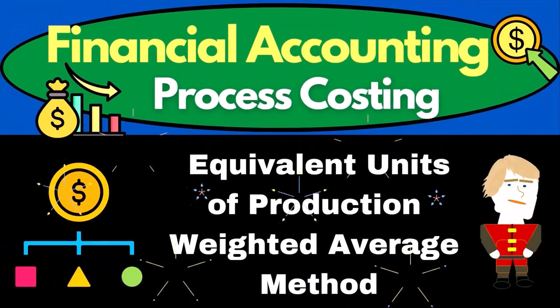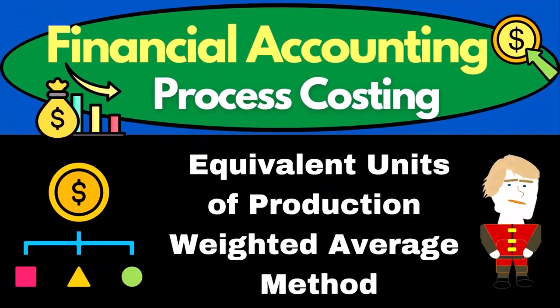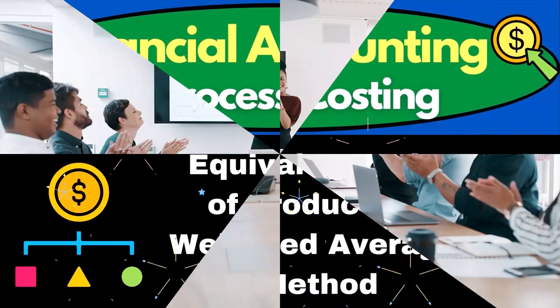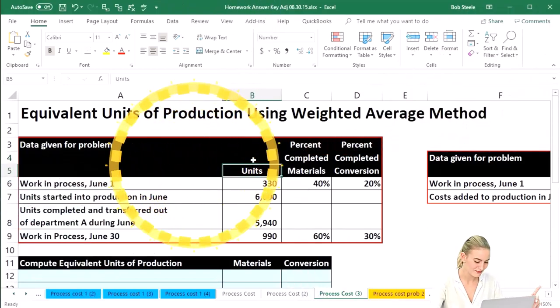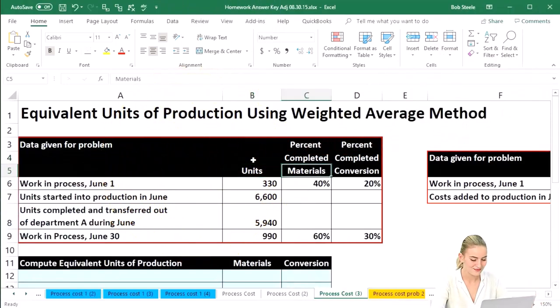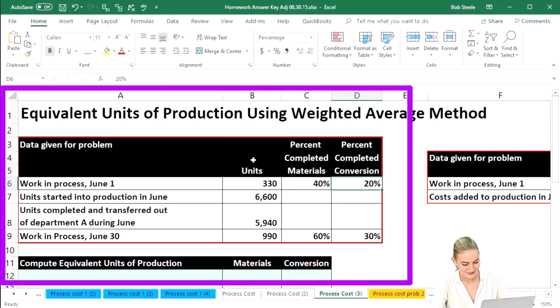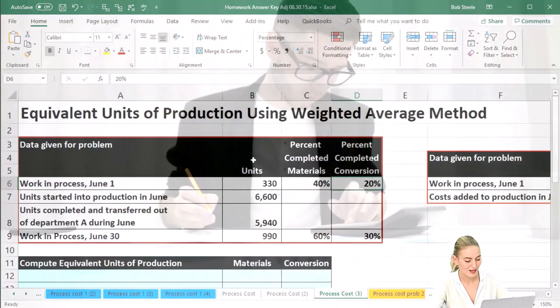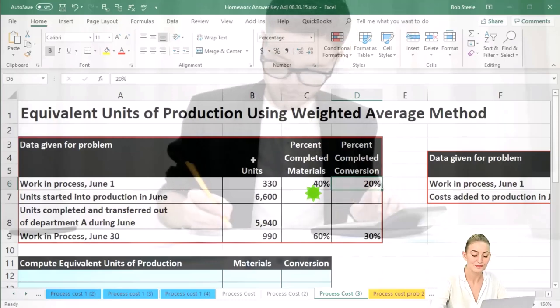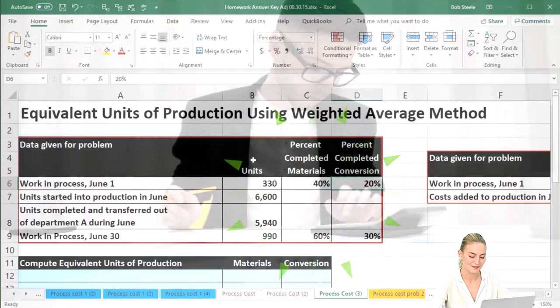In this presentation, we will take a look at equivalent units of production using a weighted average method. We're going to calculate this within Excel. This is going to be our data down below. We have the given data in terms of units, the percent completed for materials, and percent completed for the conversion. Remember that the conversion consists of those things to change the material to the finished goods — that includes the direct labor and the factory overhead.